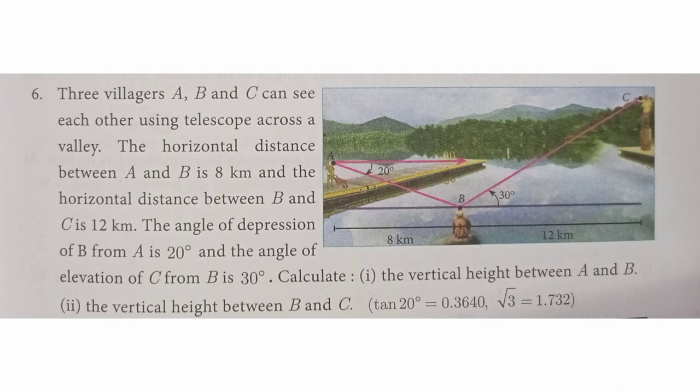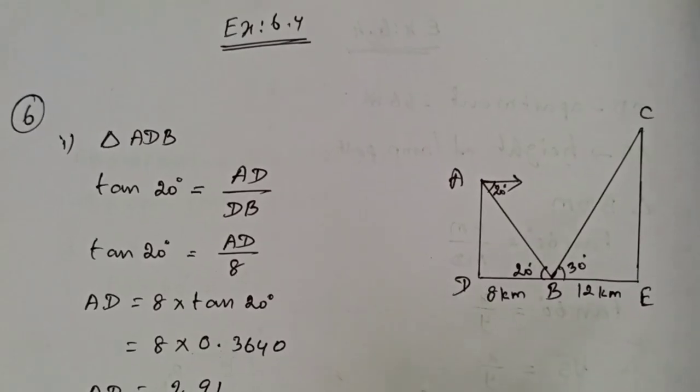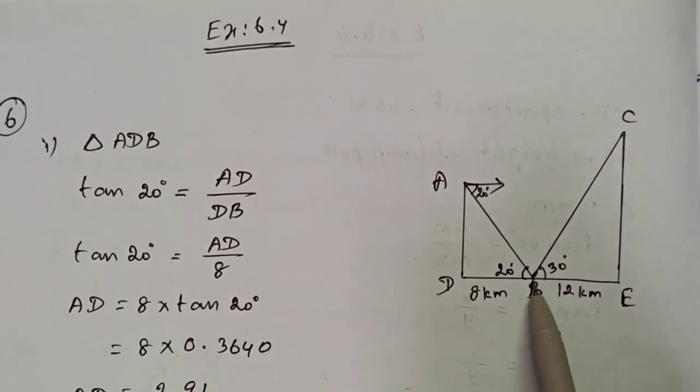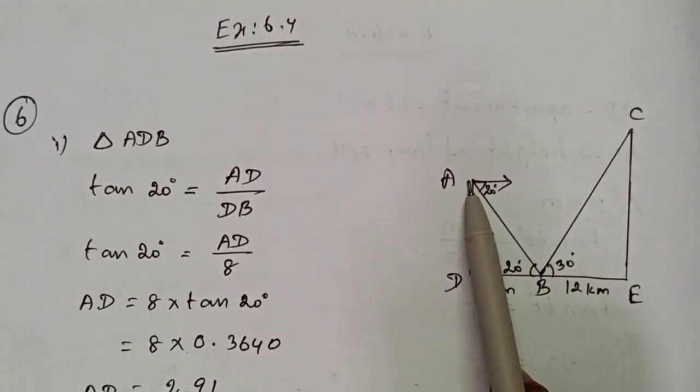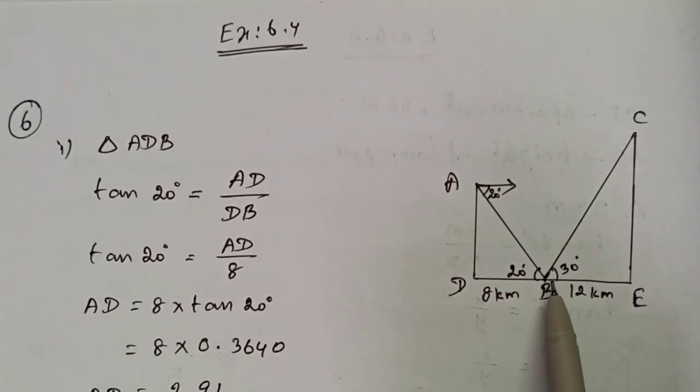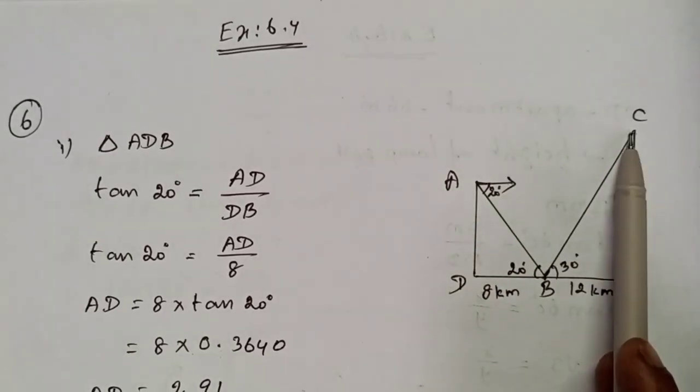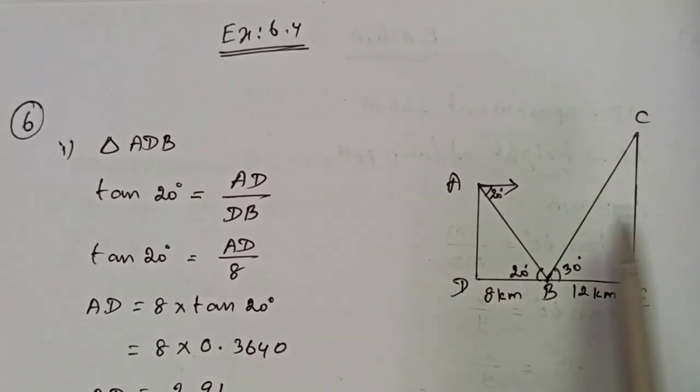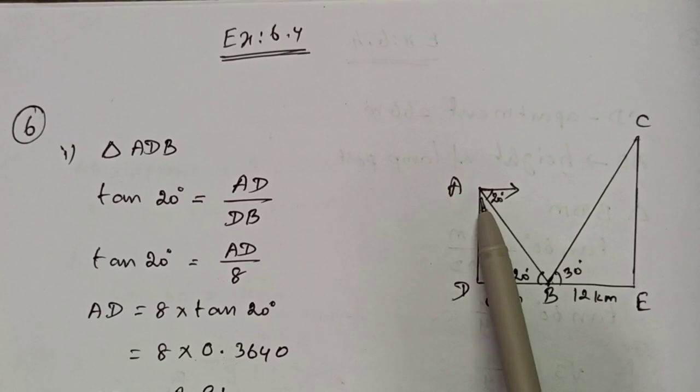This uses tan 20 and root 3 value. Now let's take a diagram. The angle of elevation is 30 degrees and angle of depression is 20 degrees.